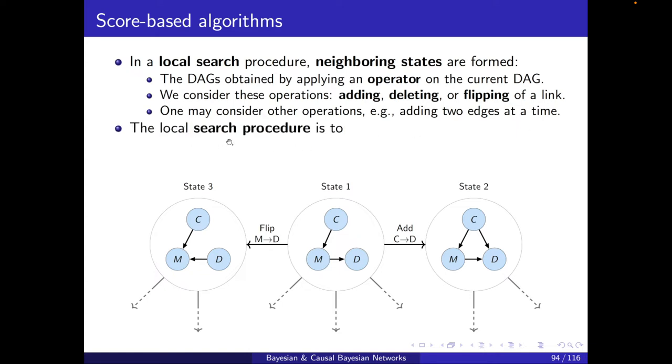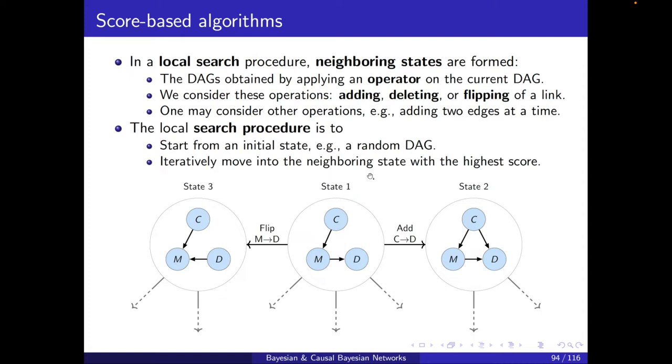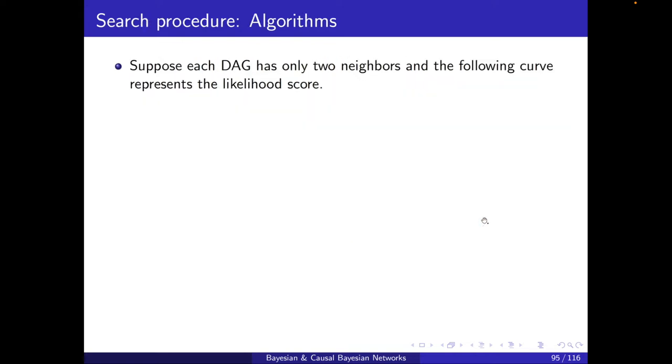Then what is the local search procedure? It's to start from an initial state, say this one, and iteratively move into the neighboring state with the high score. So I will start from 1, I will move to the one with the high score of my neighbors, and then again do that, until I reach a maximum, a local maximum.